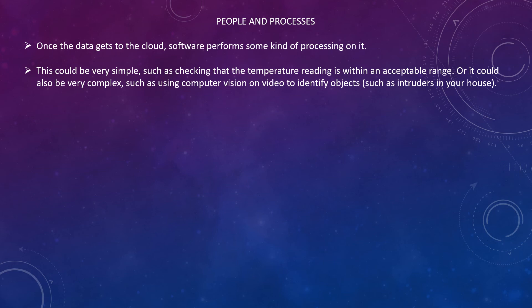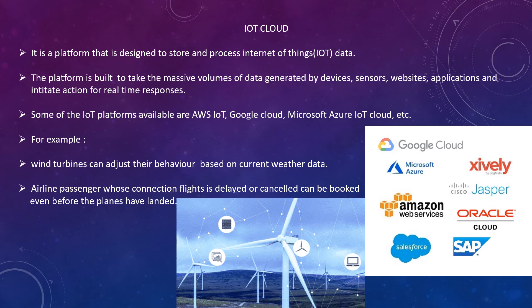IoT Cloud: a cloud is a storage device over the network. It is a platform designed to store and process Internet of Things data. Any data related to IoT — for example, your smart bulb's Wi-Fi password and settings — will be stored in the IoT cloud for processing. The platform is built to handle massive volumes of data generated by devices, sensors, websites, and applications, and to initiate actions for real-time responses.